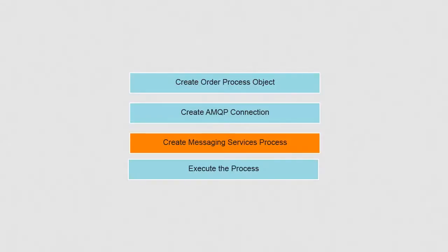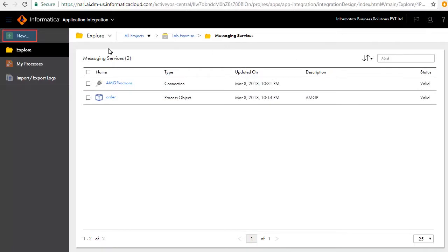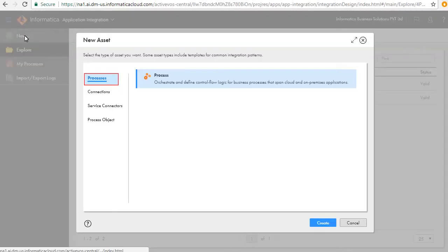We will now create the messaging services process. This process is going to be automatically triggered when a message is published to Order Queue, which in turn writes the same message to Order Queue To. There could be one or more downstream applications listening on Order Queue; for brevity we will not be showing those. Click New, select Processes, and click Create.